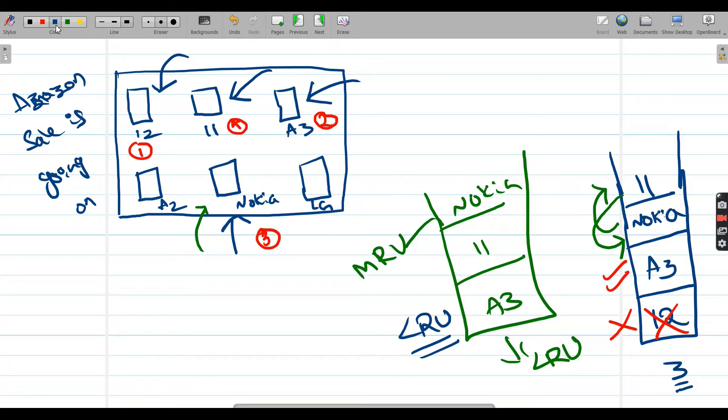The sale is going on and everything is going fine. Suddenly the demand of LG got increased. Lots of people are visiting this LG page to buy this particular smartphone. But our cache is full, it's already filled with three pages. Now we need to remove something. As we know, based on LRU, A3 is eligible to get deleted. So A3 got deleted and LG got a place into this cache. Now you can observe my cache is having LG, Nokia, 11, and my MRU is going to be LG because this is the most recently used one.